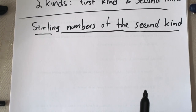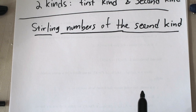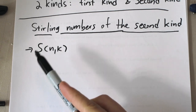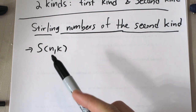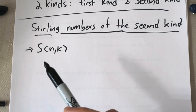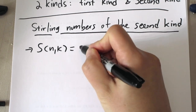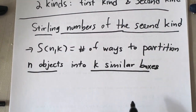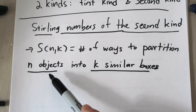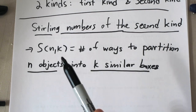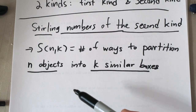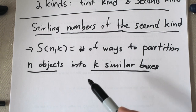So what are Stirling numbers of the second kind? We're gonna denote it by S(n,k). It's a type of number where you input n and k, and it counts the number of ways to partition n distinct objects into k similar (indistinguishable) boxes. It's probably easiest to see by example.